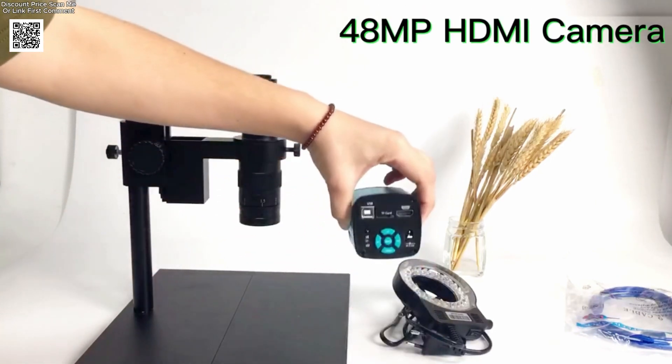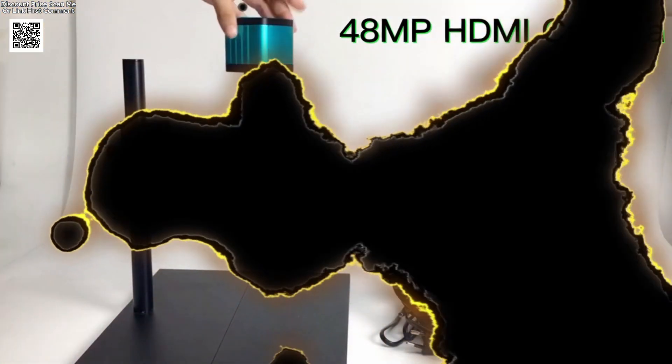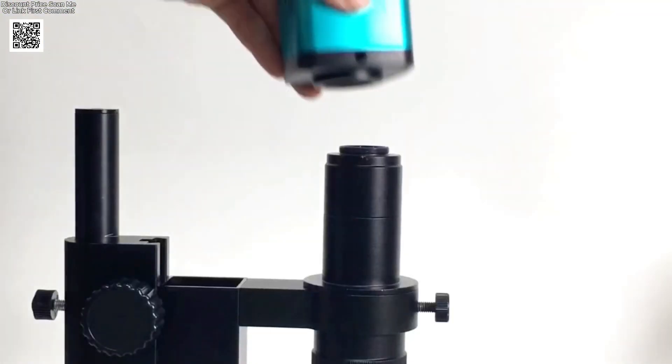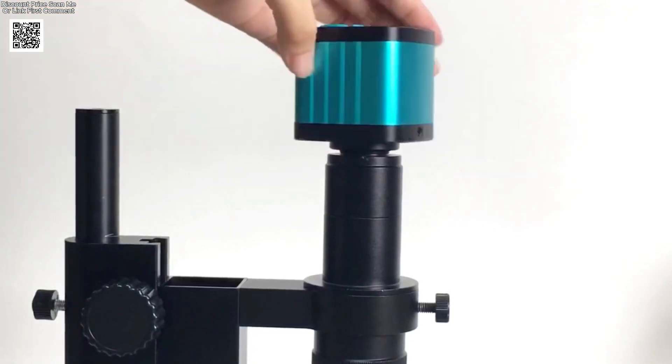Paired with a 56 LED ring light featuring adjustable brightness, you get powerful shadow-free illumination for any task. The adjustable bracket allows full rotation and height adjustment.